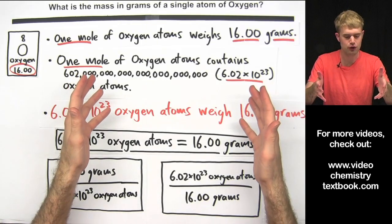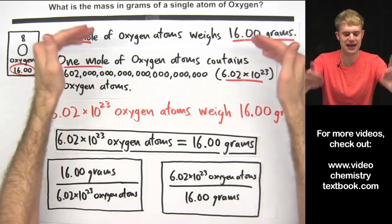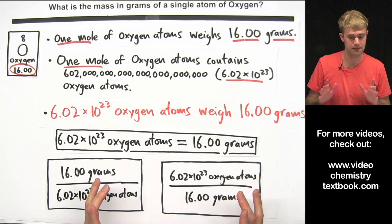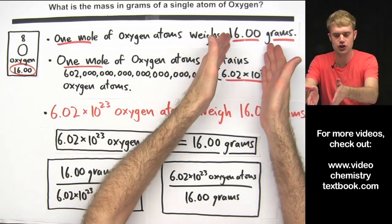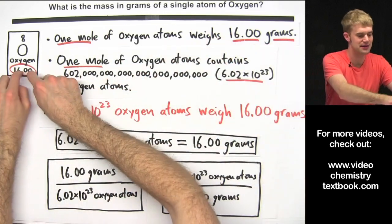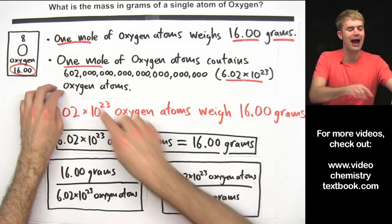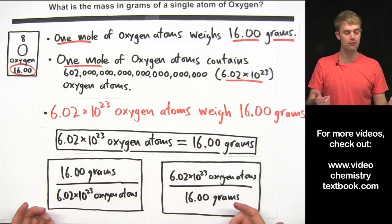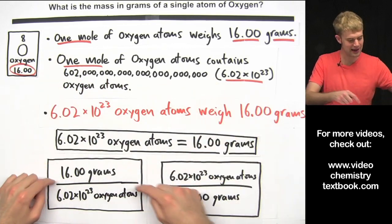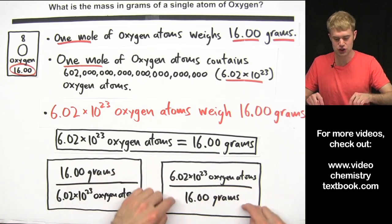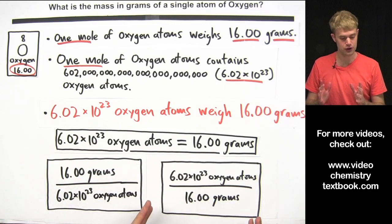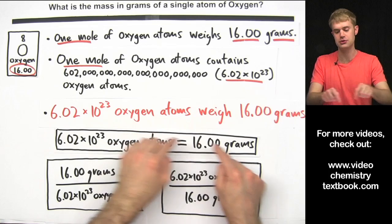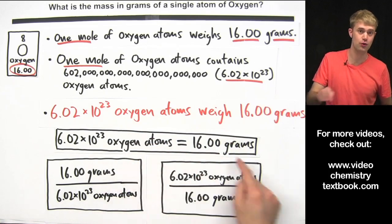The key to solving that problem is being able to take the molar mass information and write conversion factors with it. We knew one mole of oxygen weighed 16.00 grams and how many oxygen atoms are in one mole, so we could write conversion factors to go from number of oxygen atoms to grams and back.